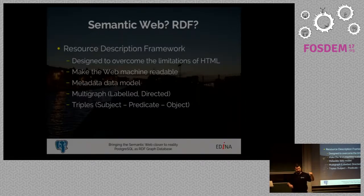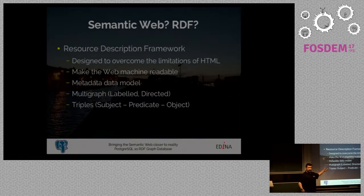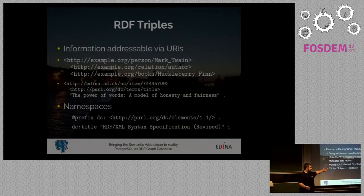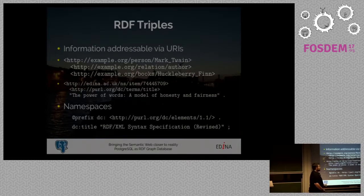Instead of the entity-attribute-value model that we're used to, we've given them fancy names, and now they're called subject, predicate, and object in RDF. The subject is the thing we're talking about, the predicate is the property or action taken by the subject. As these are three things, we call them RDF triples.